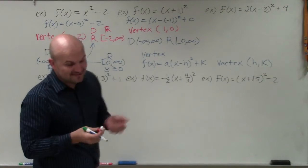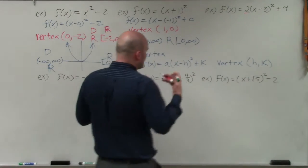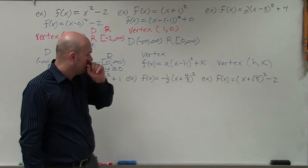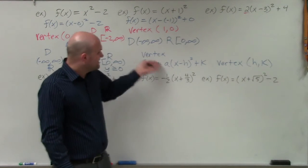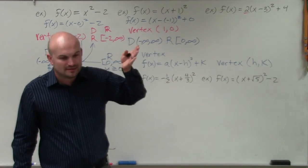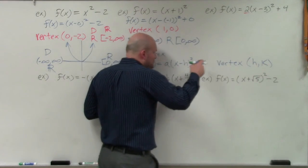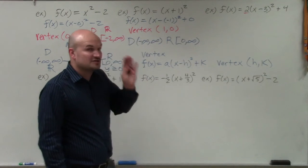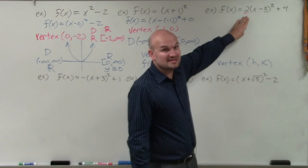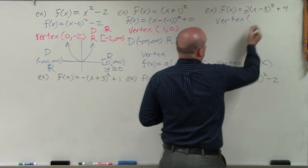In this next example, we have a 2 in front — don't let that freak you out. In vertex form, we have a value a which could be any number, and that does affect the graph, which will become important soon. But since it's positive, it's not going to directly affect the value of the vertex. Our vertex is still going to be h and k. It will affect the range, but I'll talk about that in the next two examples.